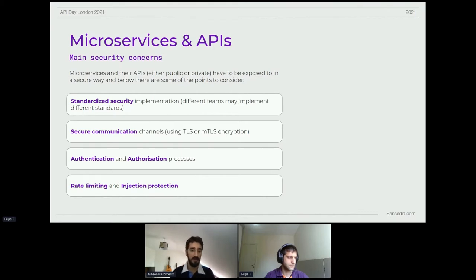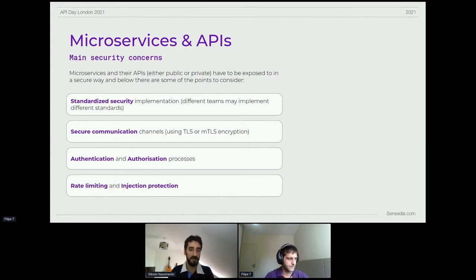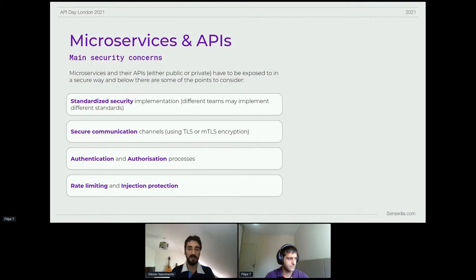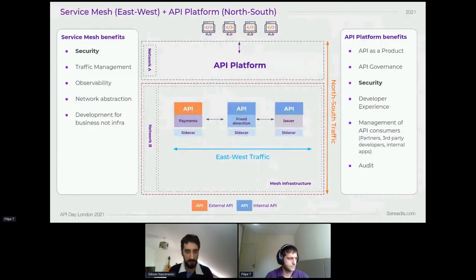Another concern is guaranteeing that communication is secure - the channels you're exposing your APIs through, connecting to your back end, and service-to-service communication. Authentication and authorization processes ensure you know who your customer is and give them access only to the resources they should access. Another strong point is putting policies in place that guarantee the right limitations to access your APIs and protect from the most common threats - SQL injection protection, XML injection protection, and similar.